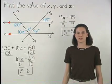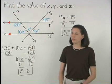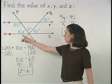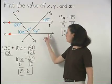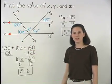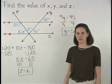Finally, to find the value of x, notice that the angles marked as 10z, x, and 9y form a straight angle. So we know that these angles must add to 180.